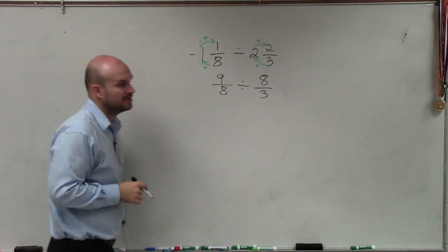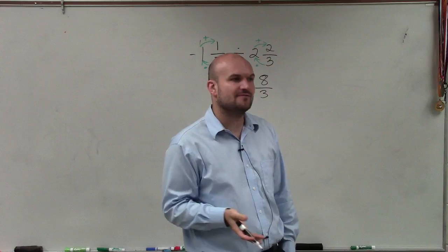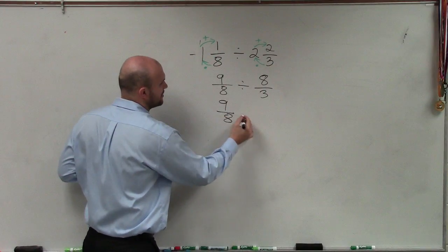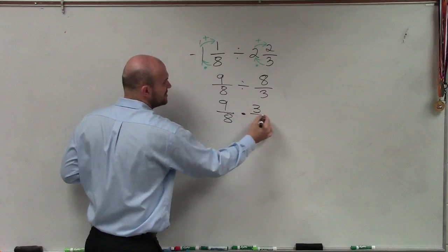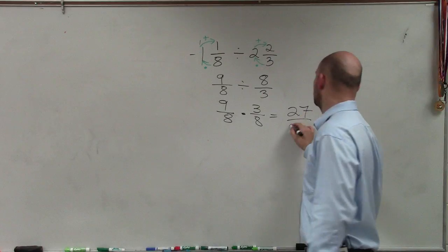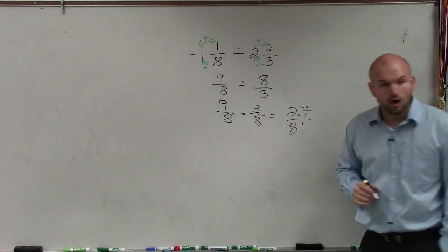So now, what we're going to do is we're going to divide. Well, when we're dividing fractions, we like to multiply by the reciprocal, which is going to provide the same operation. So therefore, I reciprocate my divisor, and what I get is 27/64.